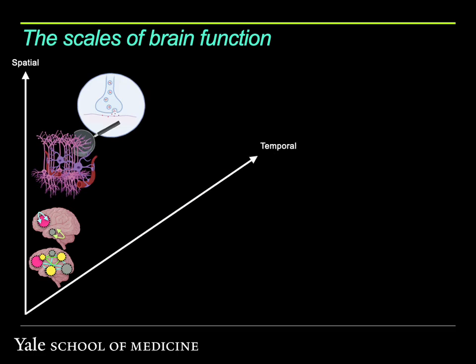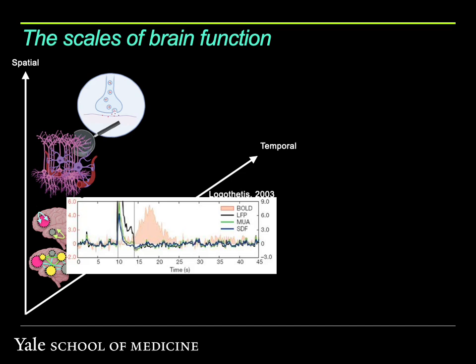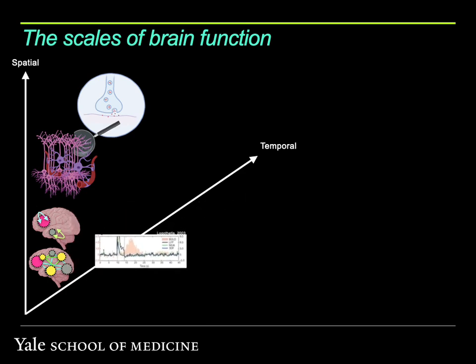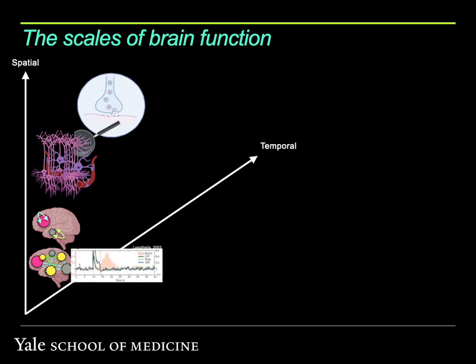The same goes for the temporal scale of events. We can study indirect measures of neuronal activity like the BOLD signal of fMRI, but also more direct measures like local field potential or single unit activity. When it comes to the temporal scale, we can interpret it in a different way and study brain function over time in brain development.